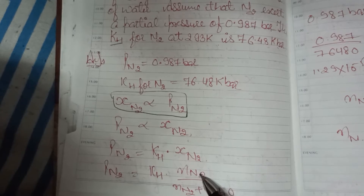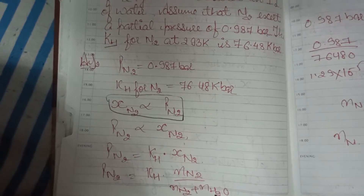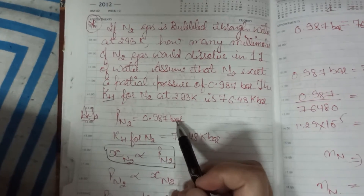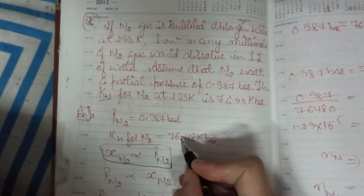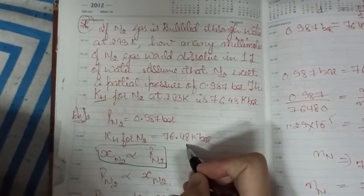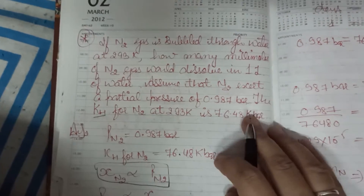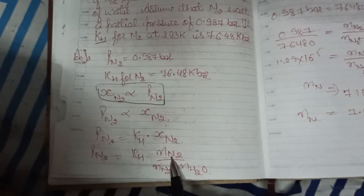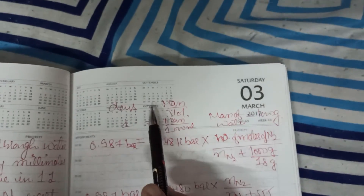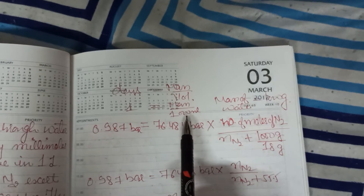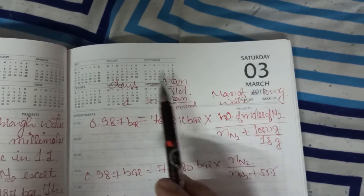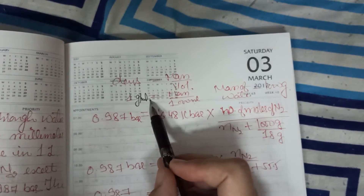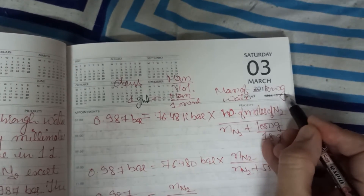Mole fraction of N₂ = (moles of N₂) / (moles of N₂ + moles of water). In the question, partial pressure of nitrogen is 0.987 bar and Henry constant is 76.48. Total volume is 1 liter. To find number of moles, we first find mass. Density of water is 1 g/mL, volume is 1 liter = 1000 mL, so mass of water = 1000 g.